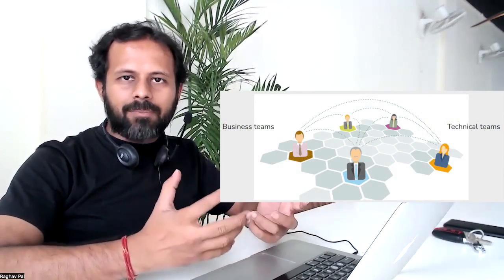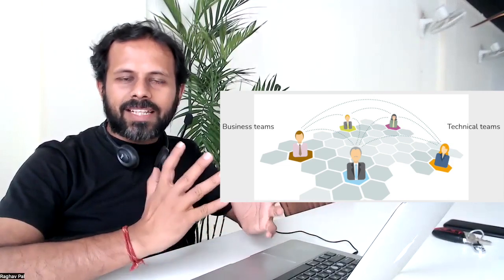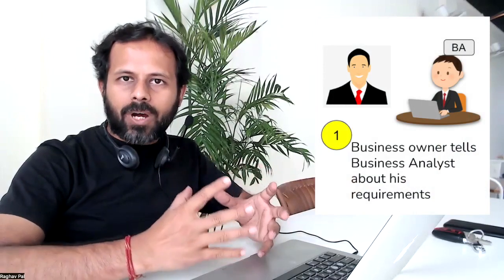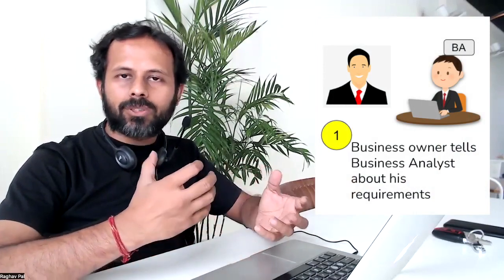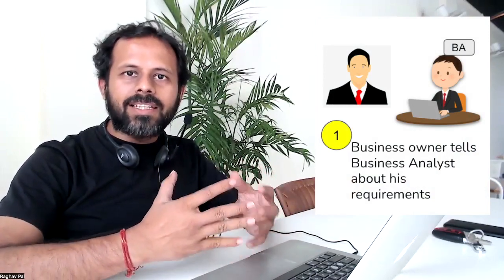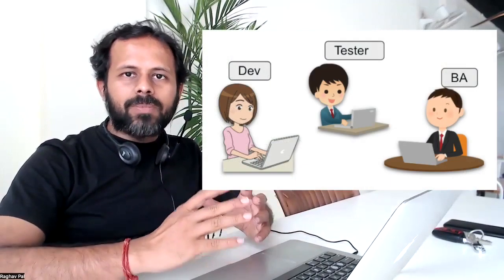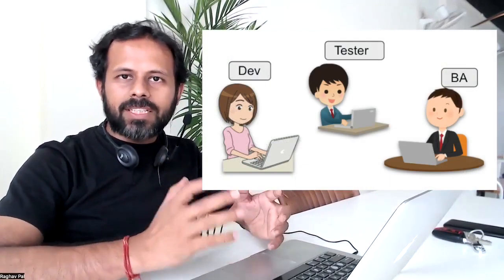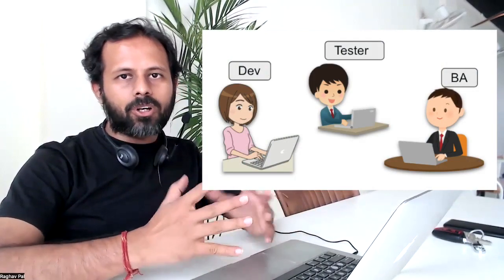What generally happens is the business teams — the business analysts or the product owners — are the people who get the requirements. They talk to the clients and the product owners, get their requirements, and create the user stories or use cases. These user stories and scenarios are then handed over to the dev team and the QA team.